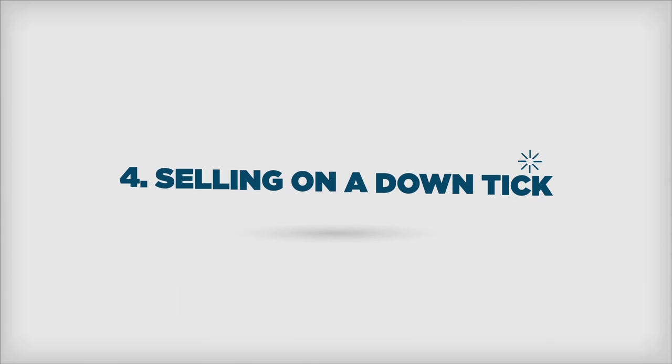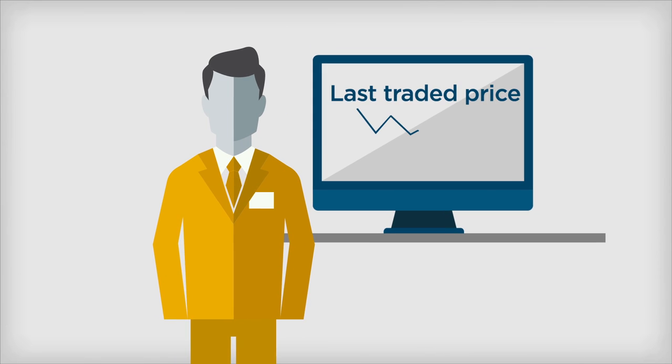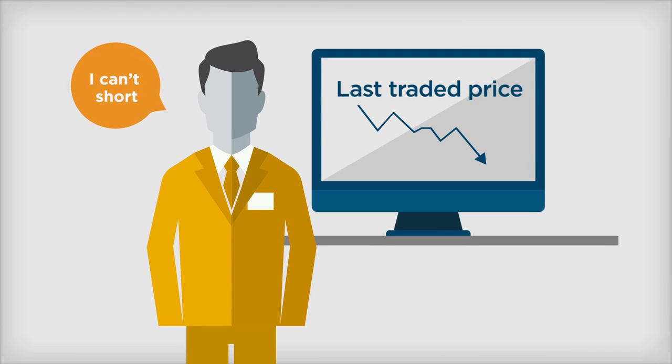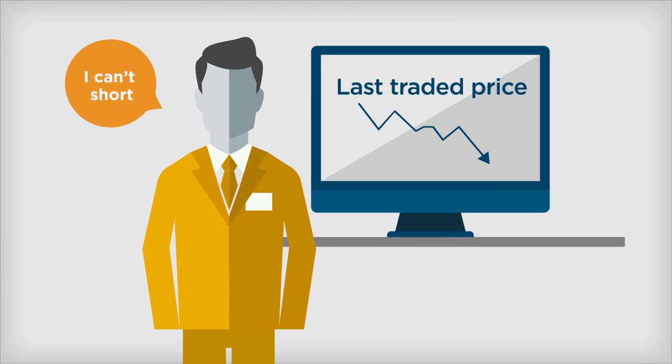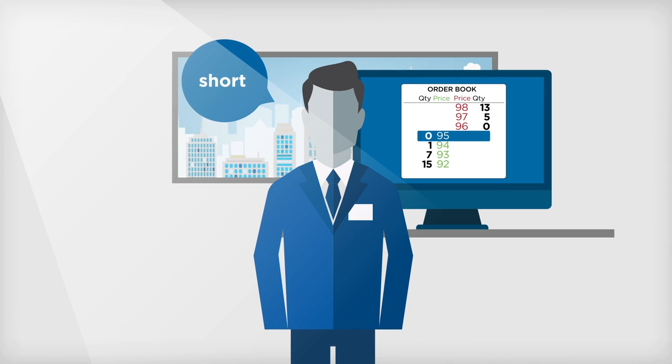And finally, when a trader shorts a stock, they are required to sell at a minimum of a tick above last traded price. This means in a downtrending market, an equity trader may never get to take a short position, thus losing out on a market opportunity. But a futures trader can be short the market just as easily as being long.